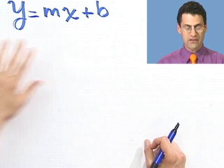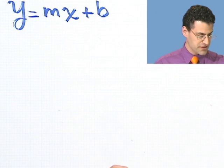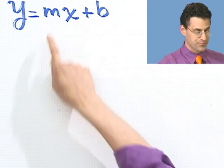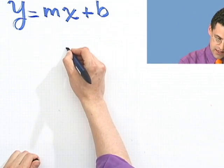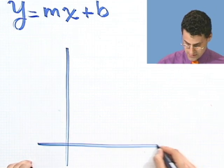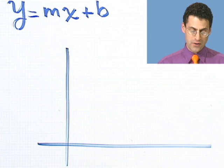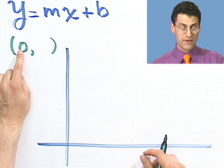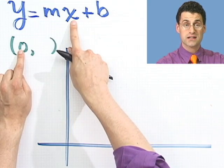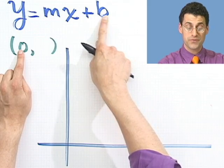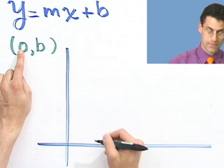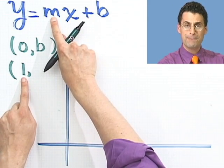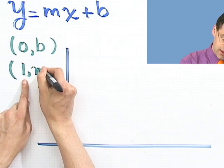Let me convince you that this is actually on the level. If we have a line of this form, it crosses the y-axis at b and must have slope m. Let's draw some axes and plot some points. If x equals 0, I plug in 0 and this term becomes 0, leaving just b — so y equals b. Let's also plug in x equals 1: y equals m times 1 plus b, which is m plus b.